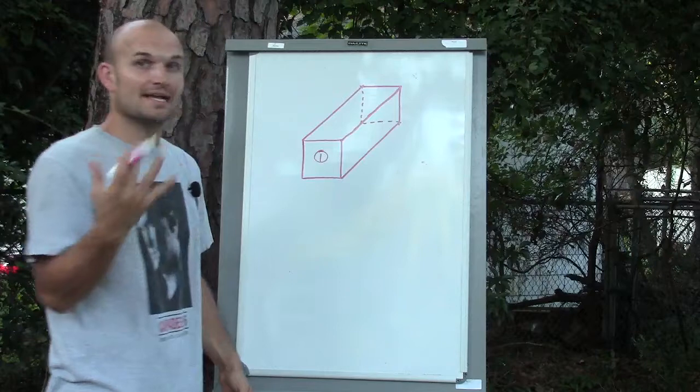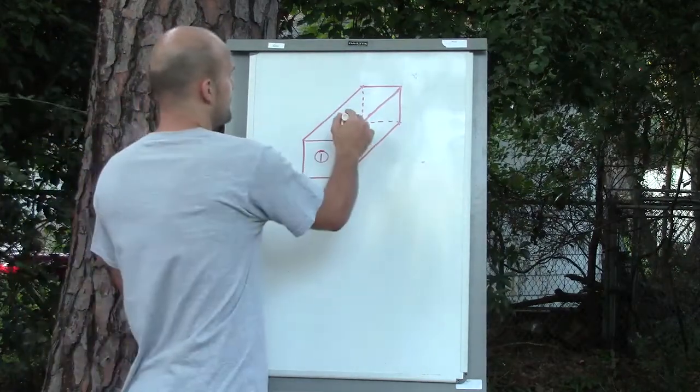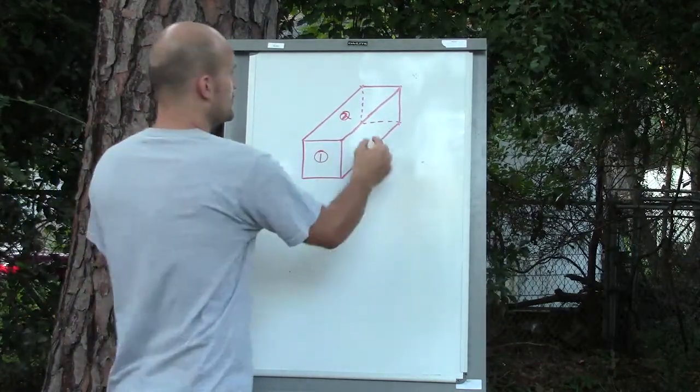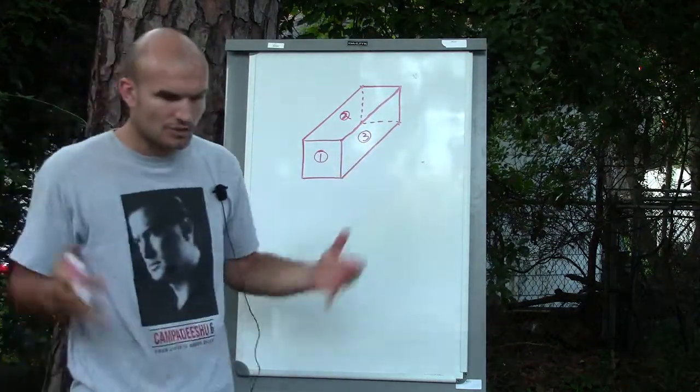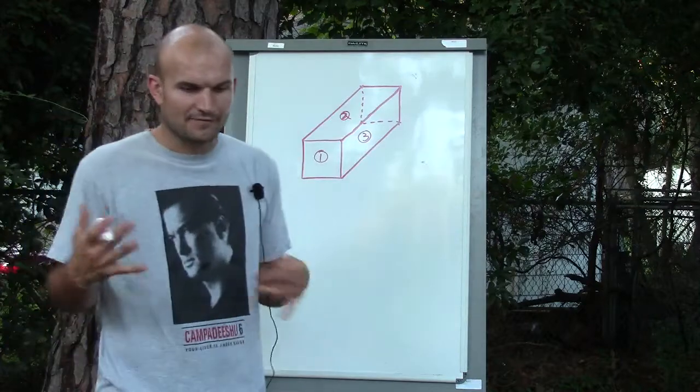So the first couple of side lengths that I can see here: the front side, the one that's facing me, it'd be one. The top is going to be two, and the third side is going to be three. So I have three different sides here.